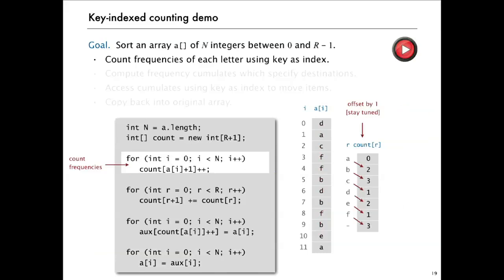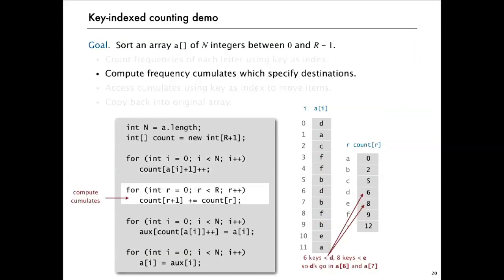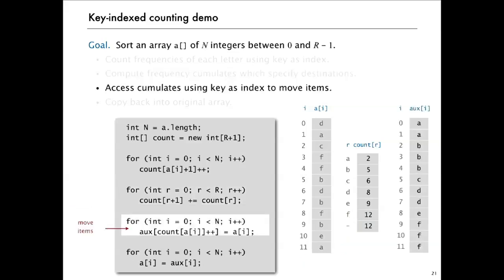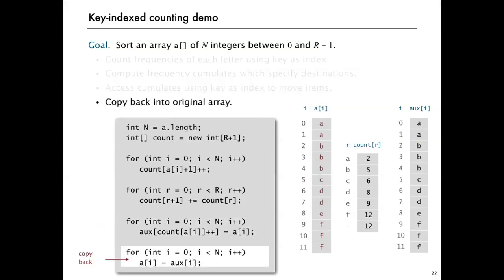Quick summary of key indexed counting. We make one pass through the array to count frequencies of each letter using the key as an index. Then we go through that count array to compute cumulates just by adding each new one into the running sum. Then we use those cumulates and access that using key as index to actually move items over and get them in sorted order and then move back into the original array.